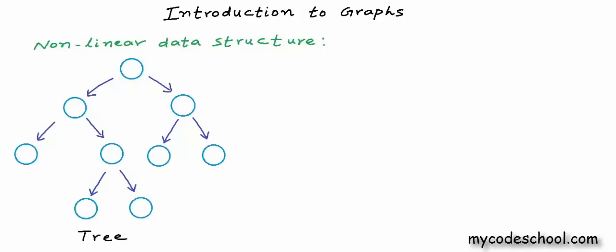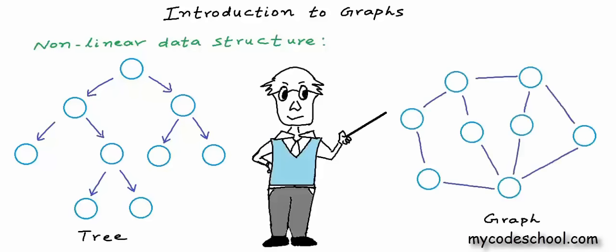Tree is a hierarchical structure. As we understand, data structures are ways to store and organize data, and for different kinds of data, we use different kinds of data structures. In this lesson, we are going to introduce you to another non-linear data structure that has got its application in a wide number of scenarios in computer science. It is used to model and represent a variety of systems, and this data structure is graph.